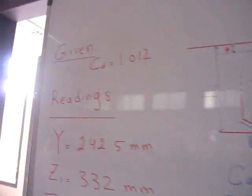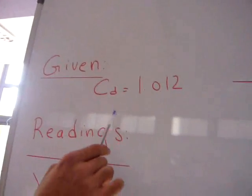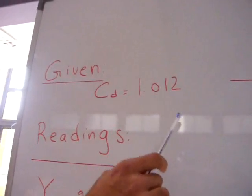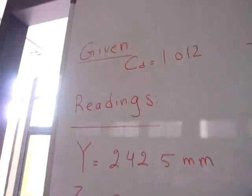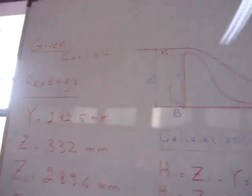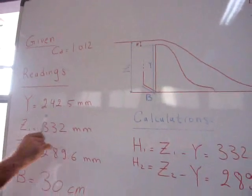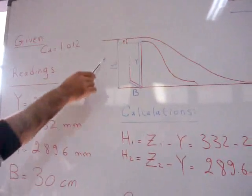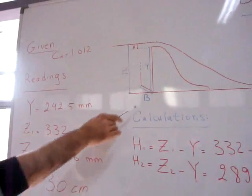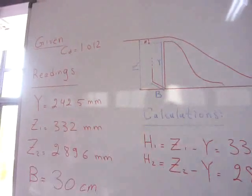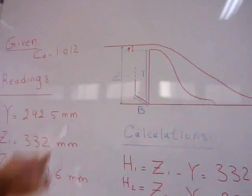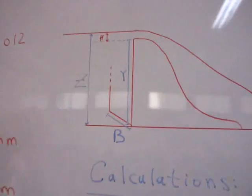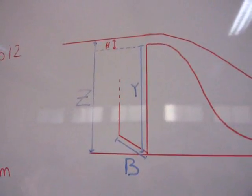The discharge constant is given as CD equals 1.012. We get readings from the experiment: Y, the height of the ogee weir; B, the width of the ogee weir; and we calculate H, the height of water over the ogee weir.